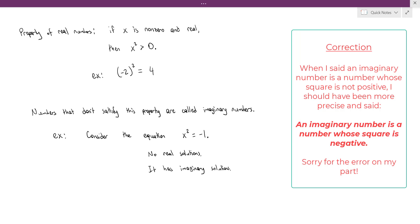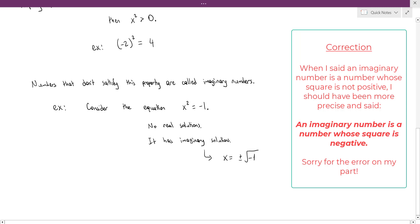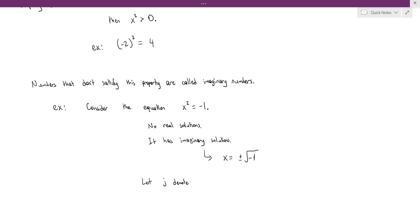While this equation has no real solutions, it does have imaginary solutions. Namely, the solutions would be the square roots of minus 1. It's customary, at least for electrical engineers, to use the letter j to denote a square root of negative 1. Mathematicians will typically use i instead of j. But for various reasons, electrical engineers prefer to use the letter j. So then you could say the solutions to the equation x squared equals negative 1 are x equals plus or minus j.